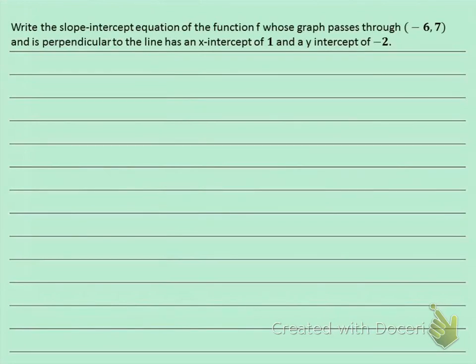This question is asking us to write the slope-intercept equation of the function f whose graph passes through this point right here, negative 6, 7,